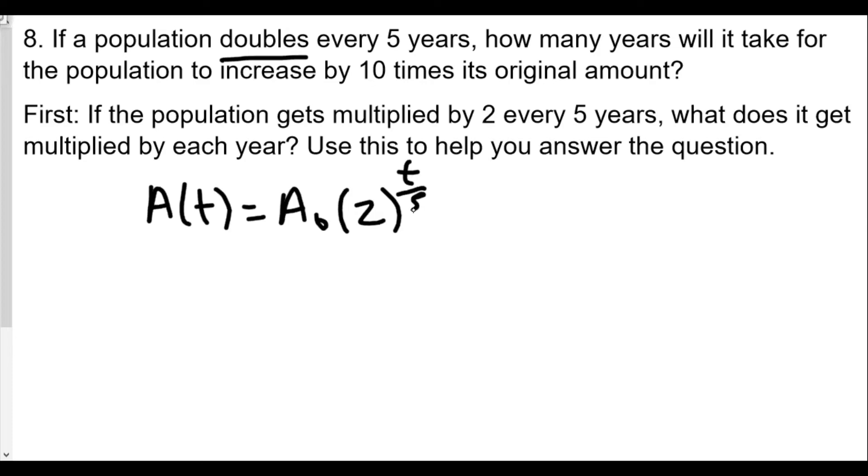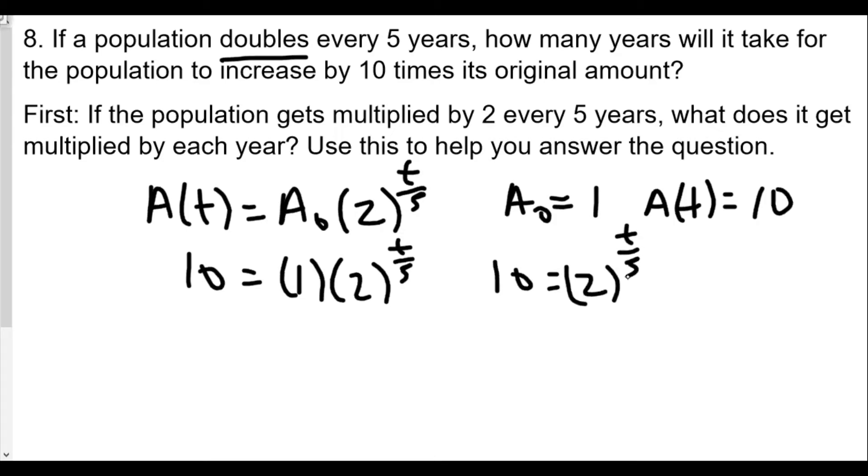So t over 5 will be our exponent. If we want to figure out how long it takes to increase to 10 times the original size, we'll use this formula. Let's let A(0) equal 1. Therefore, A(t) will equal 10. So we set up our equation: 10 equals 1 times 2 raised to the t over 5 power. You don't need to divide both sides by 1. So we have 10 equals 2 to the t over 5 power. It doubles every 5 years.